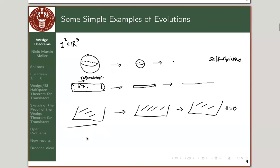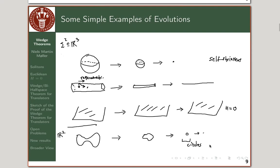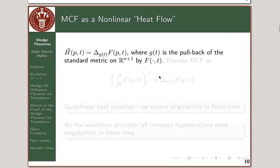Similar to what you saw in the applet: if you take a non-convex curve, it becomes more and more round in the end before it vanishes to a point. This is in contrast to what can happen in higher dimensions, where it's not only spheres that can appear as singularity models. Even though the mean curvature flow looks a bit like a heat equation, the Laplacian is evaluated at the induced metric at each new time, making it a genuinely nonlinear constant-coefficient-type heat equation.